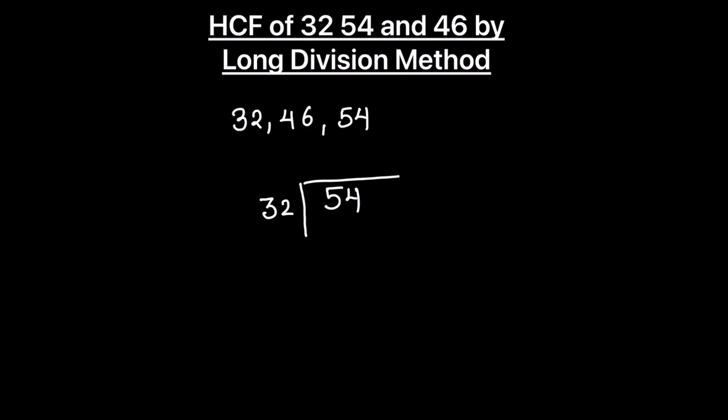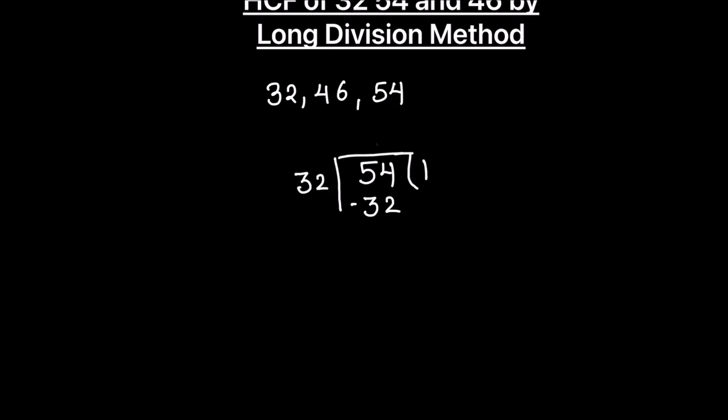32 times 1 is 32, and 32 times 2 is 64, which is more than 54, so we take 32 times 1, which is 32. We get a remainder of 22.